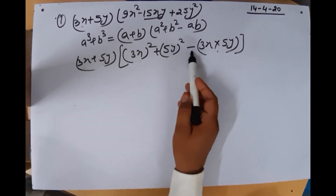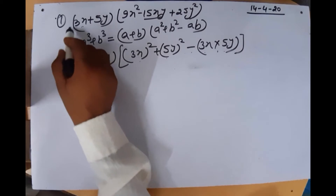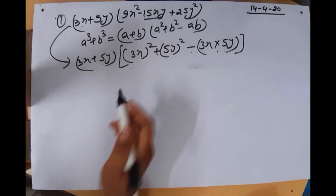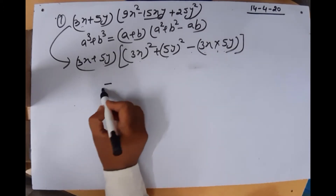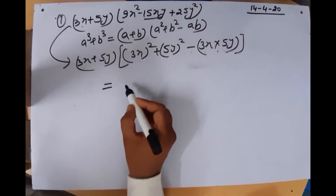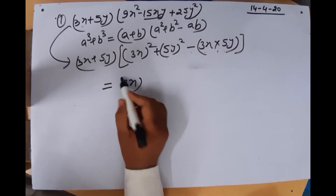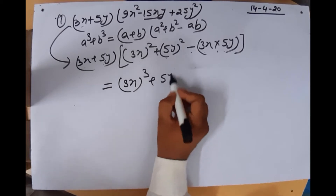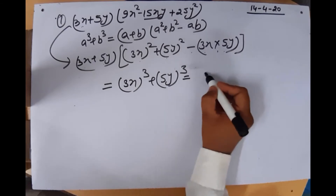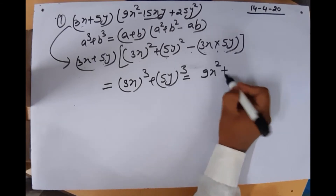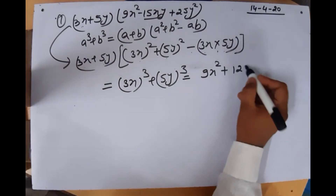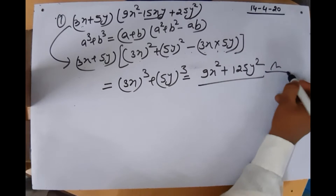This is the formula a + b, a² + b² − ab — we have just converted the expression into this form. So the answer is directly a³ + b³, meaning (3x)³ + (5y)³ = 27x³ + 125y³. This is our final answer.